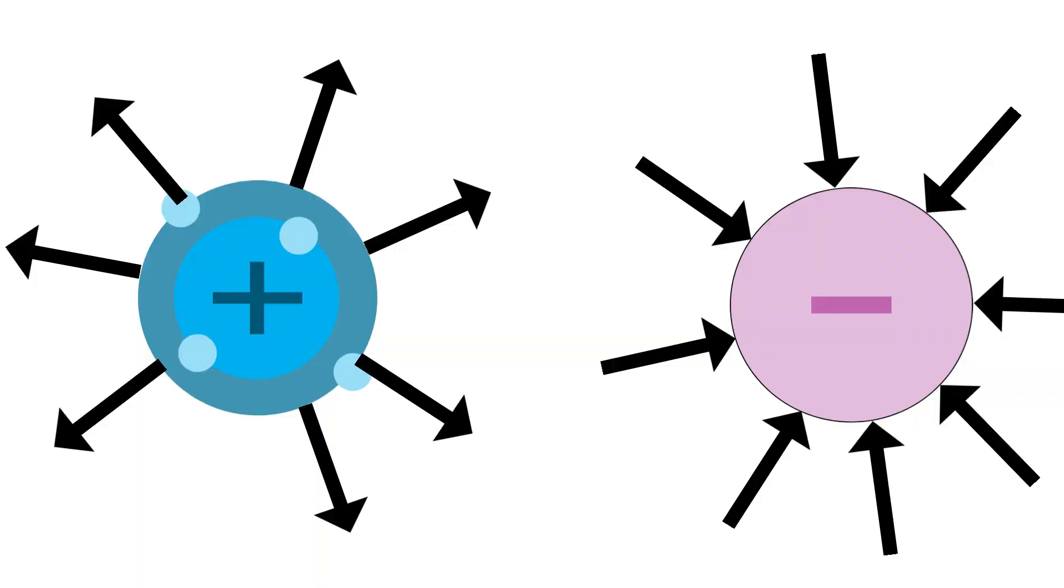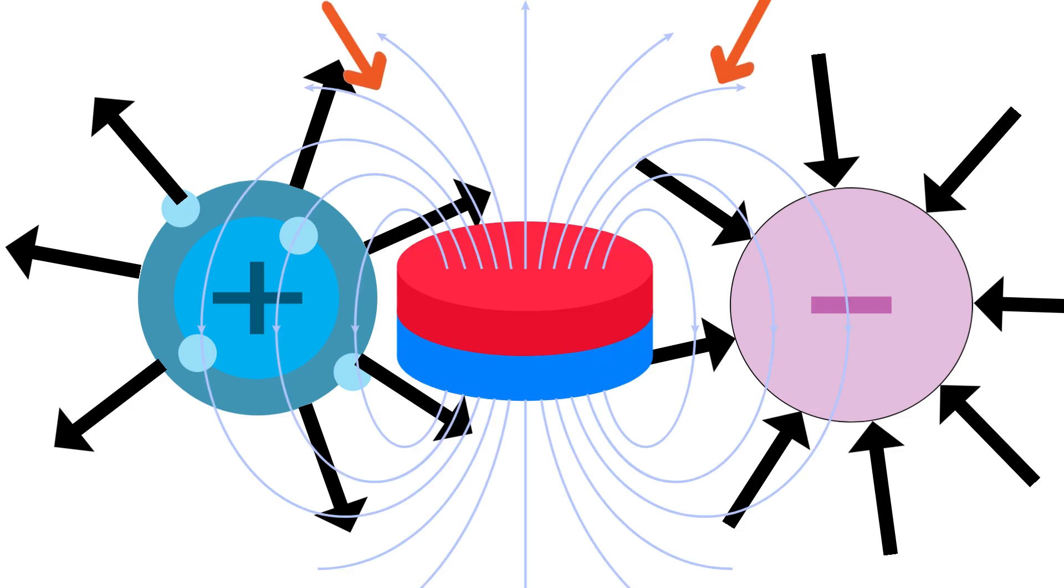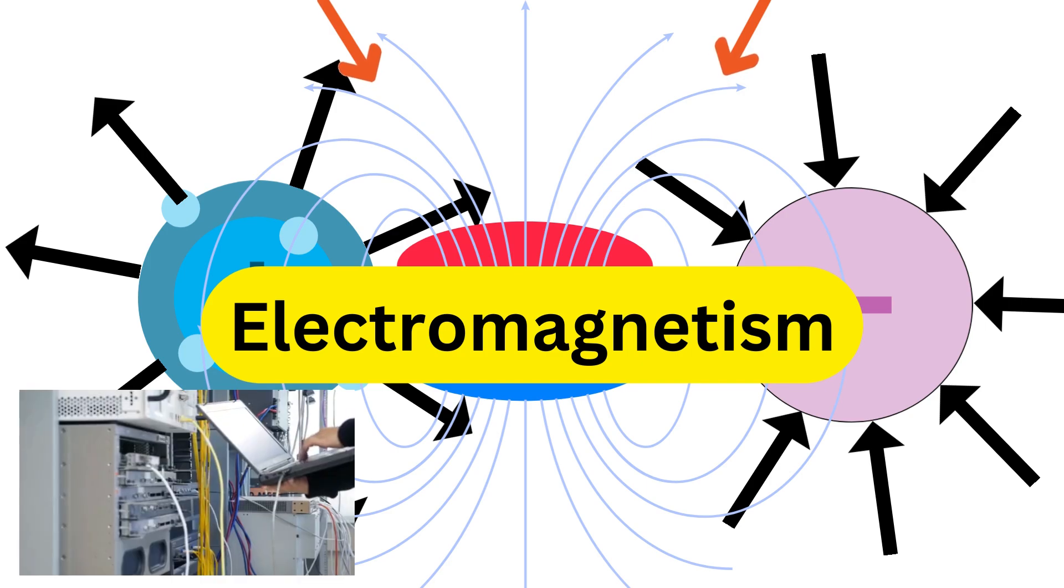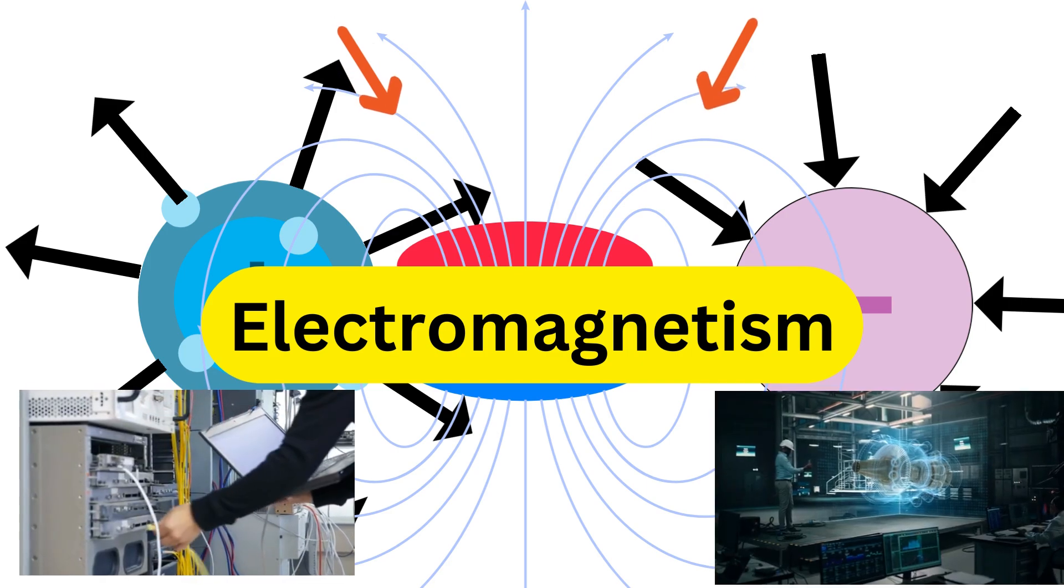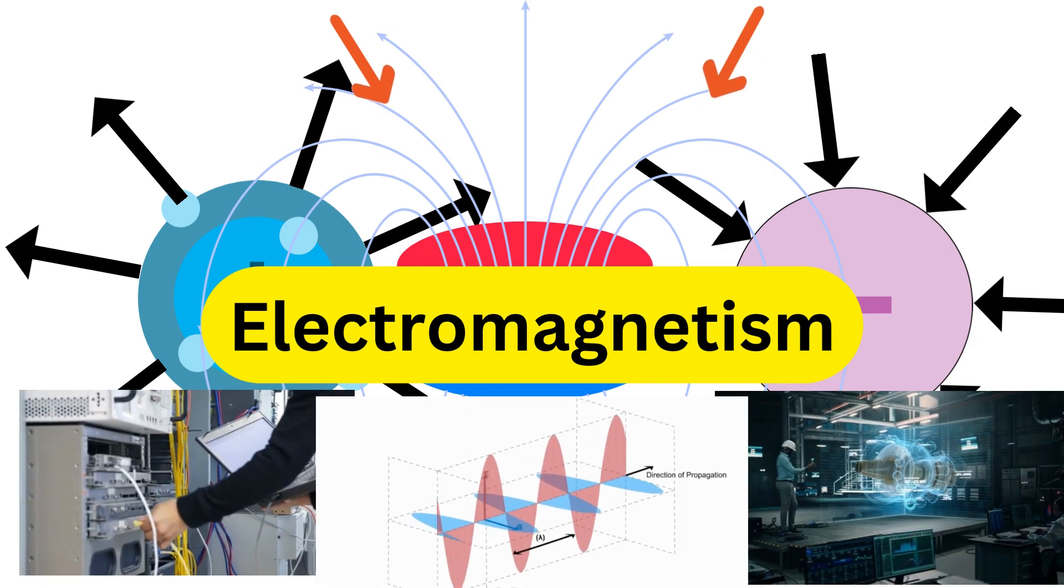In conclusion, the study of the interactions between electric charges and magnetic fields is known as electromagnetism. It includes research on magnetic and electric fields, how they interact, and how electromagnetic waves spread.